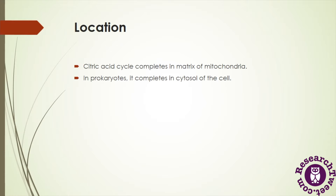In eukaryotic organisms the cycle completes in the mitochondrial matrix. But in the case of prokaryotes, there is no double membrane-bound organelle present, so there is no mitochondria in prokaryotic cells. In that condition, the citric acid cycle completes in the cytosol of the cell.